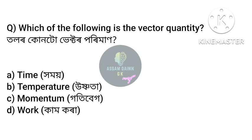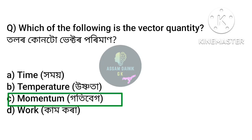Which of the following is a vector quantity? Answer: Option C, momentum. Momentum is a vector quantity.